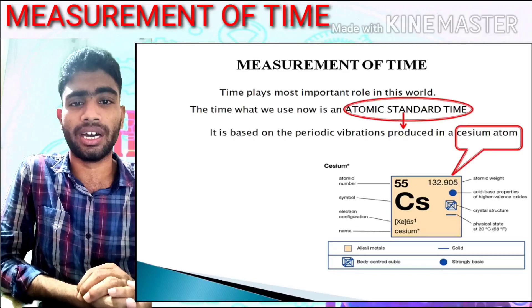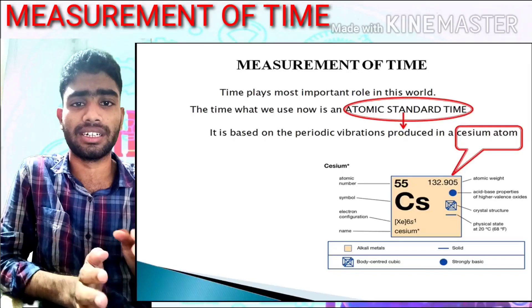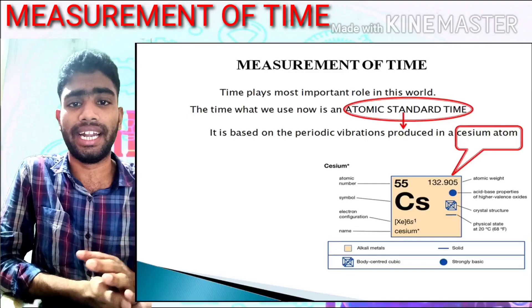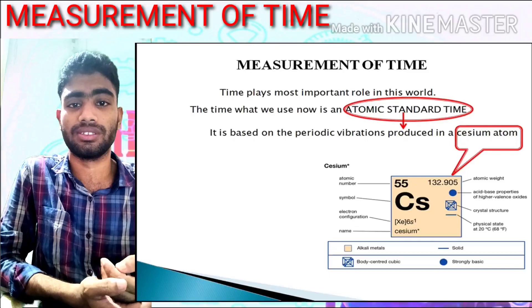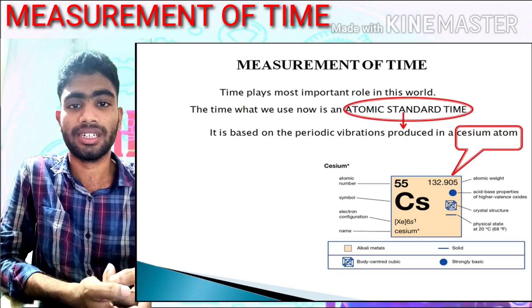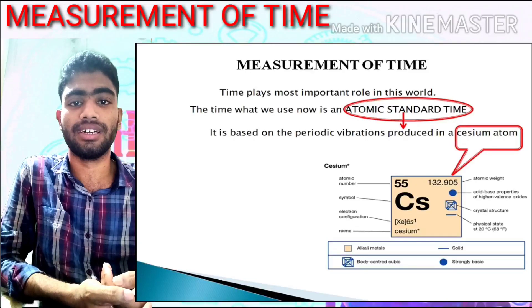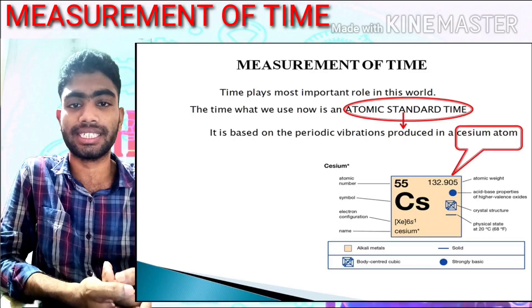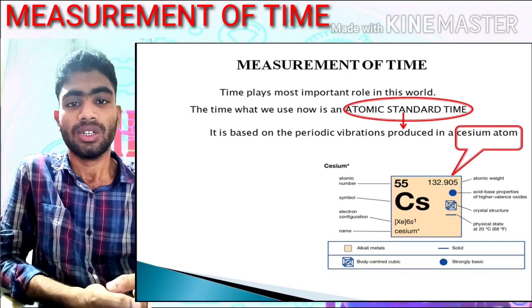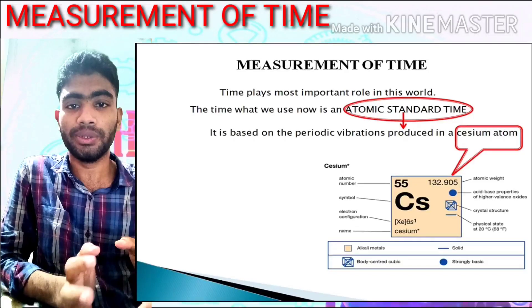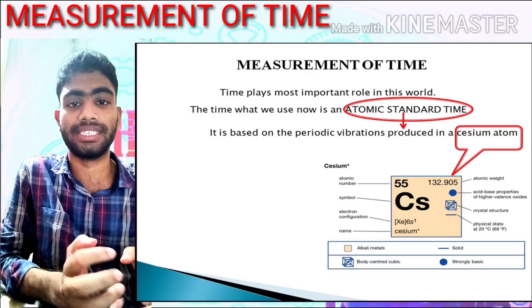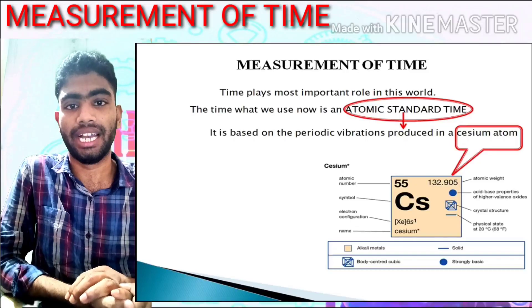The time what we use now is known as atomic standard time — you can also say international standard time. So what do you mean by atomic standard time? Basically, what you know as 'time' is atomic standard time.